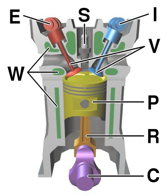In 1823, Samuel Brown patented the first internal combustion engine to be applied industrially. In 1854 in the UK,